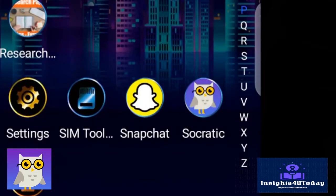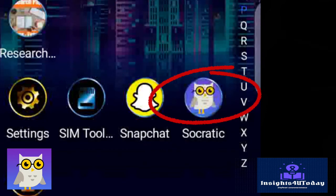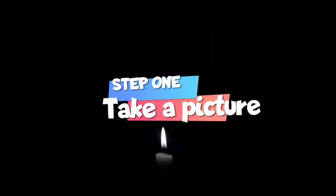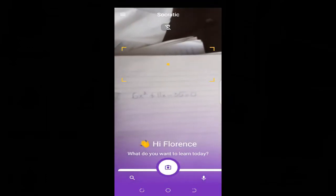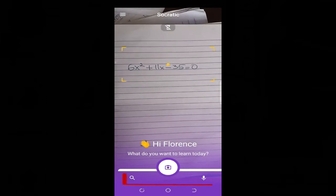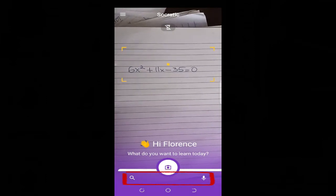Let's see the steps in using the Socratic by Google app in a snap. Step 1: Take a picture of the linear or quadratic equation. For example, we have a handwritten sample of a quadratic equation. You can also voice search or browse too.